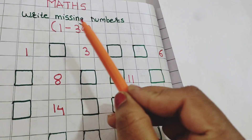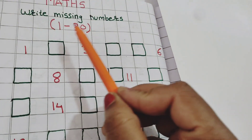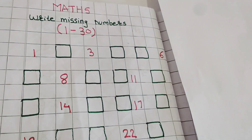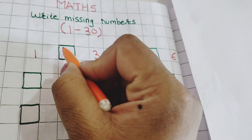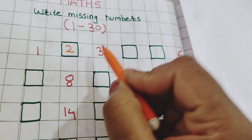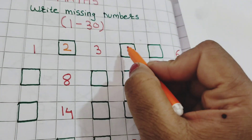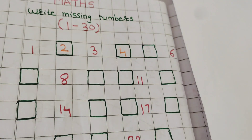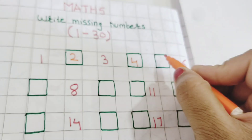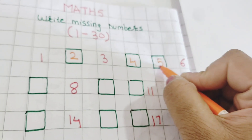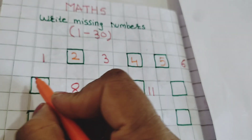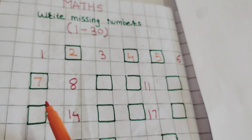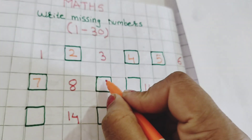Write missing numbers. 1 to 30. 1, 2, 3, 4, 5, 6, 7, 8, 9.